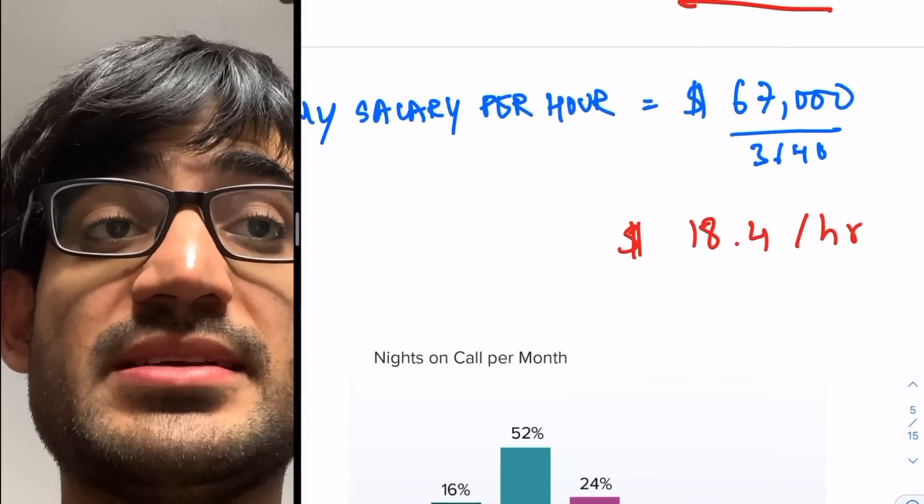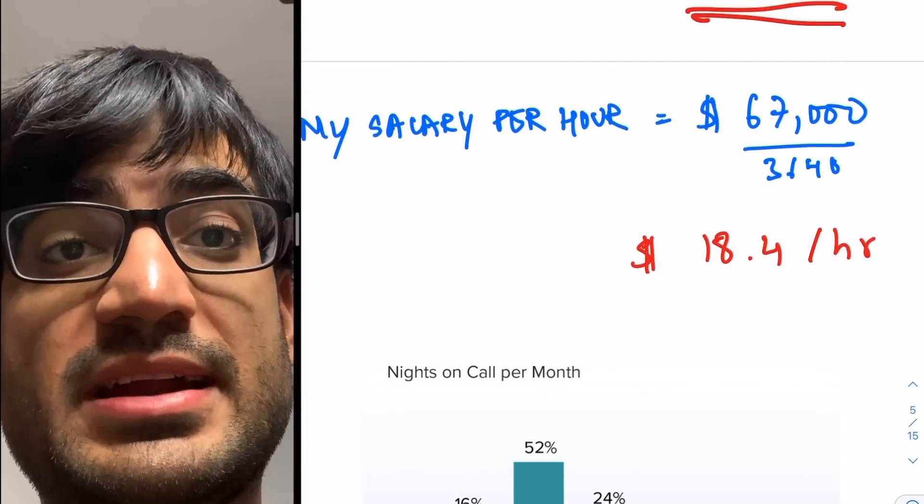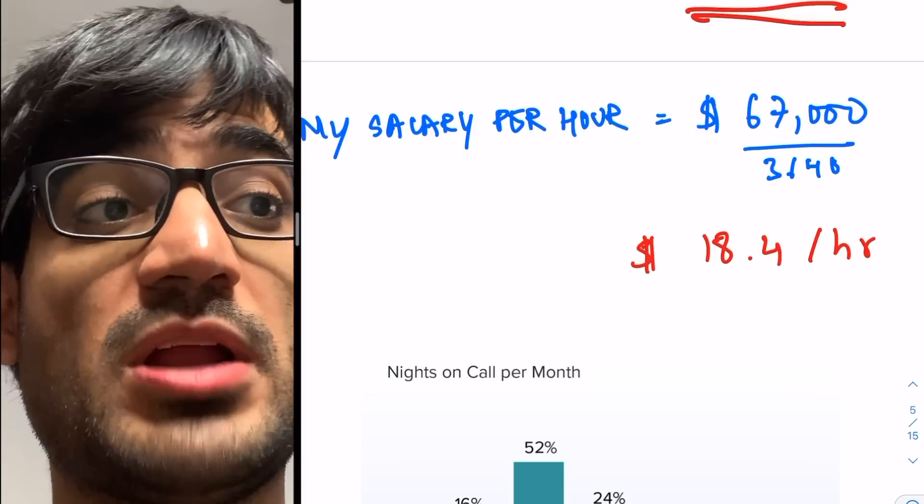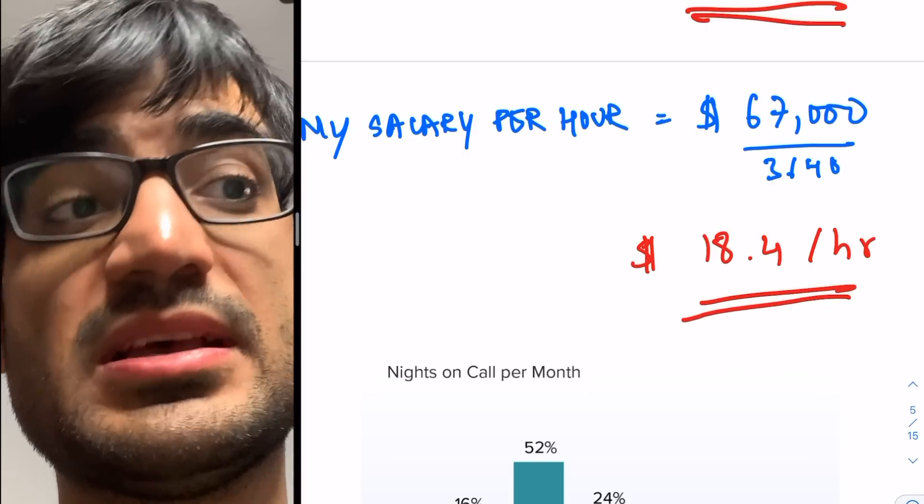My salary per hour is a bit different, you can see. So I'm making on average $67,000 across all years divided by 3640. So I'll be making about $18.4 per hour.